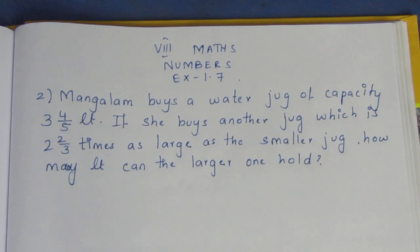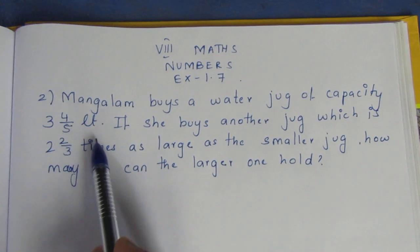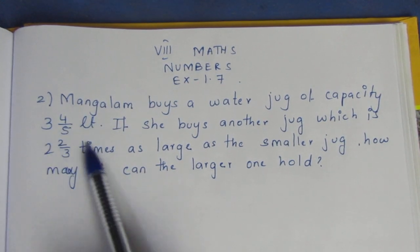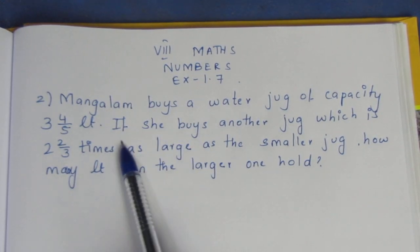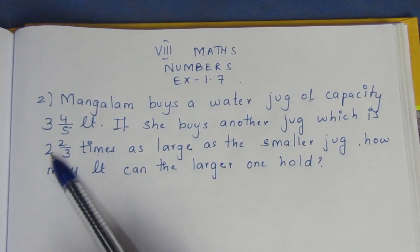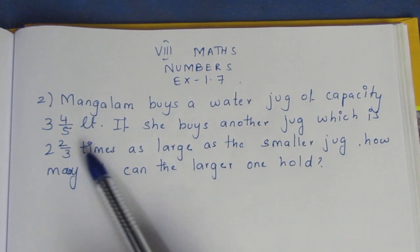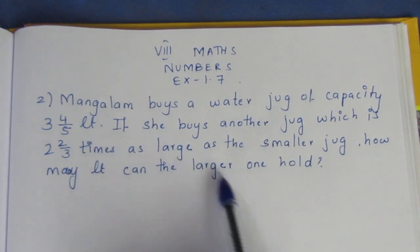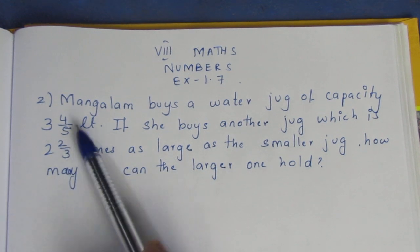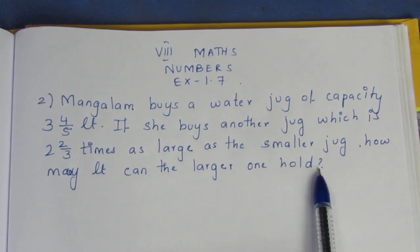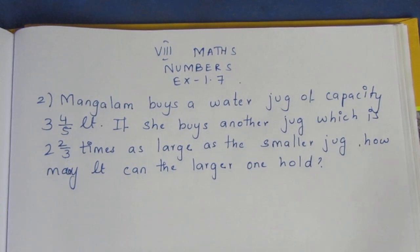Mangalam buys a water jug of capacity 3 and 4/5 liters. She buys another jug which is 2 and 2/3 times as large as the smaller jug. How many liters can the larger jug hold?